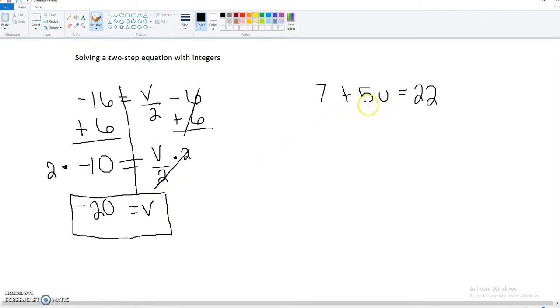Now on this side, I'm going to draw my line again. Remember, we are always doing adding and subtracting first. So this 5 is multiplying the u, so we're not doing this one. We're doing the 7. 7 is positive, so we're going to subtract 7 on both sides.